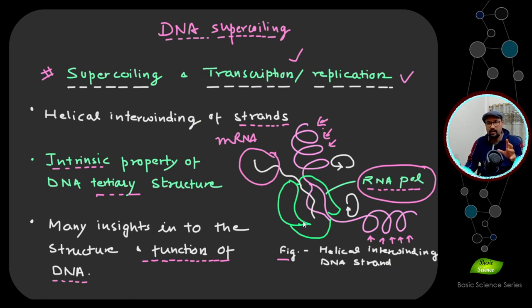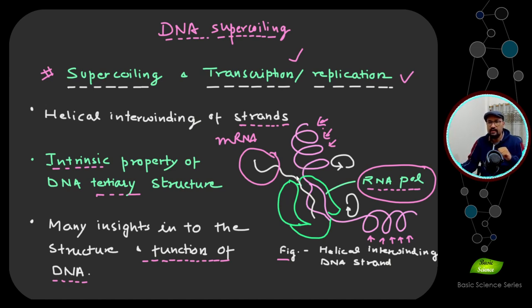In this image, where RNA polymerase is present, the DNA is in a slightly relaxed form as it reads the sequence to synthesize mRNA, causing directional movement in the DNA molecule so it can be relaxed in that particular area. That is how supercoiling and transcription and replication are interlinked.